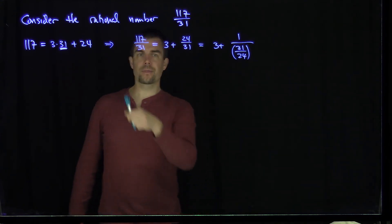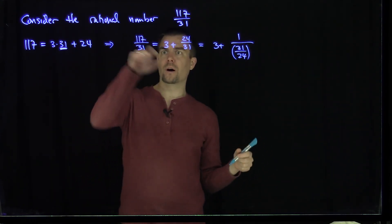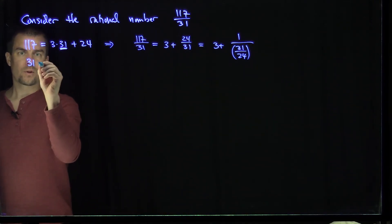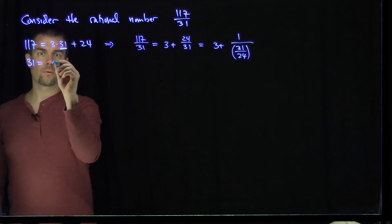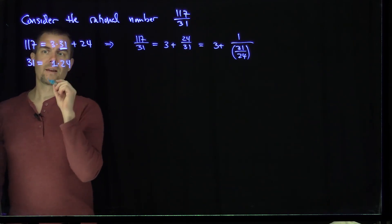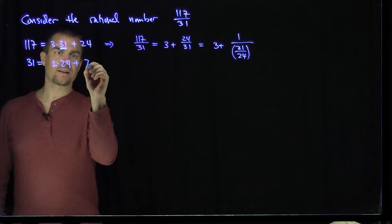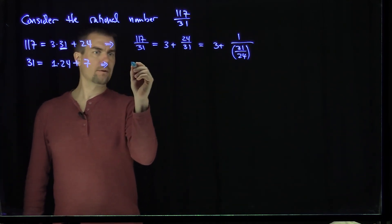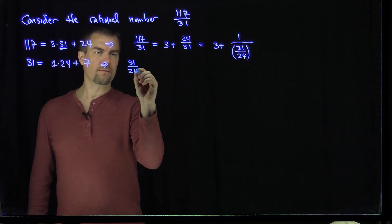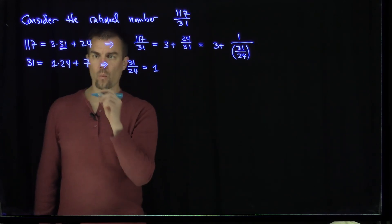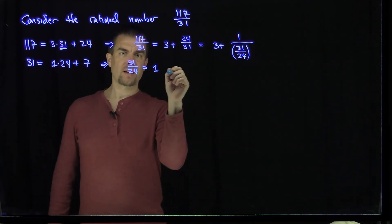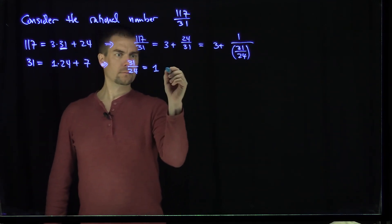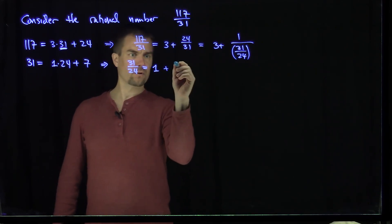And now I can play the same game with 31 and 24 as I did with 117 over 31. So 31 is equal to one copy of 24, and then 7 is left over. This tells me that 31 over 24 is equal to 1 plus 7 over 24.